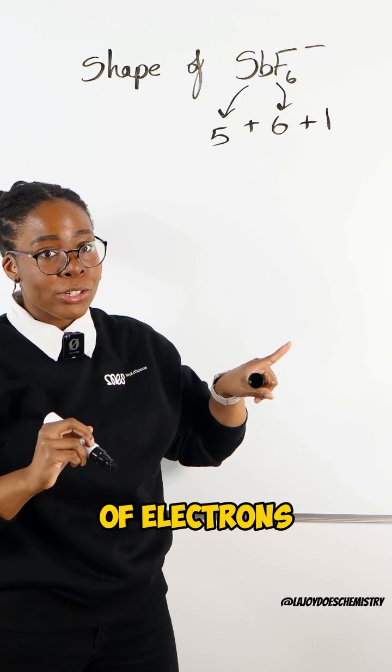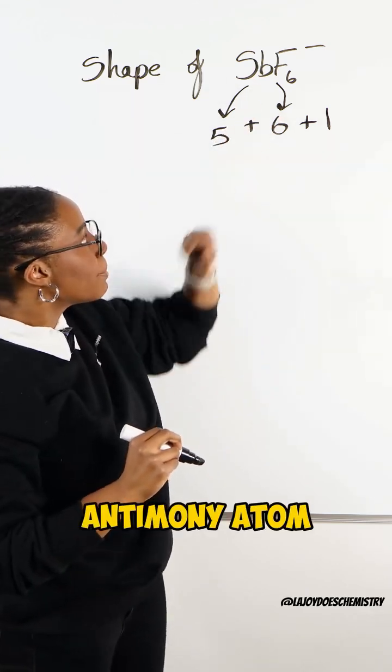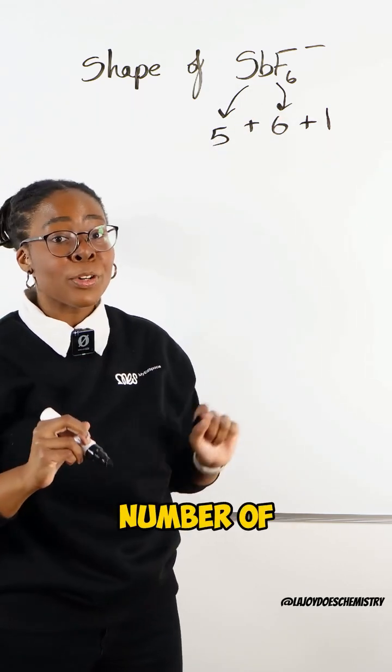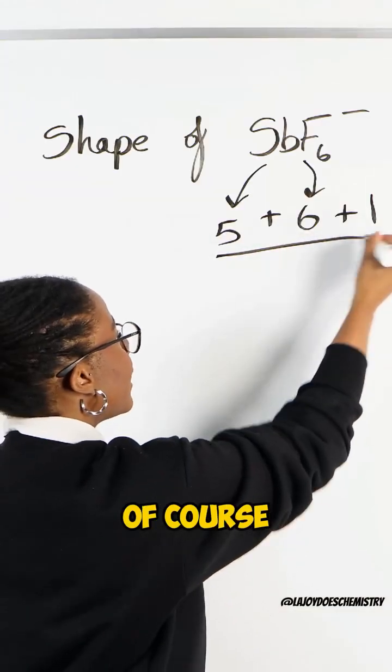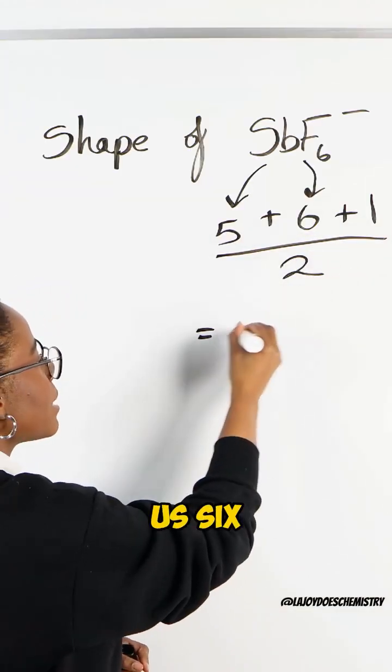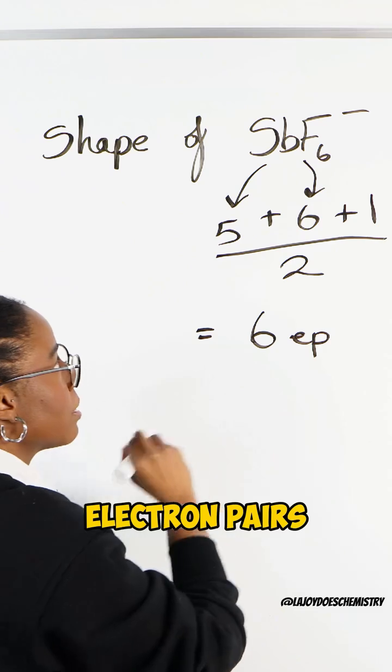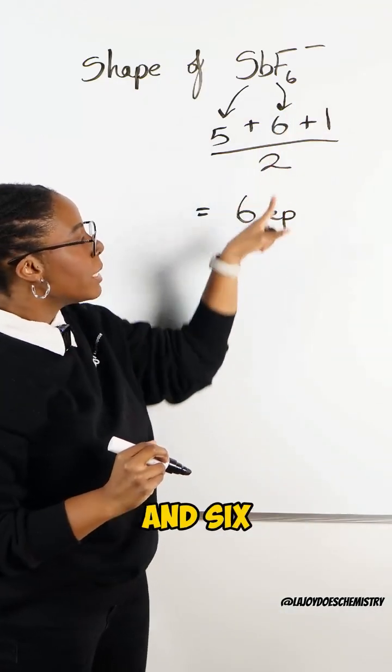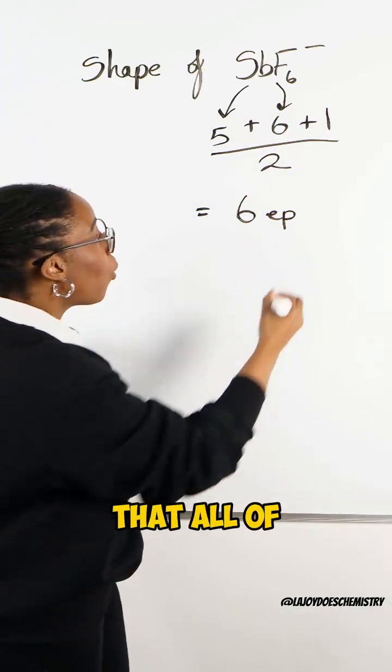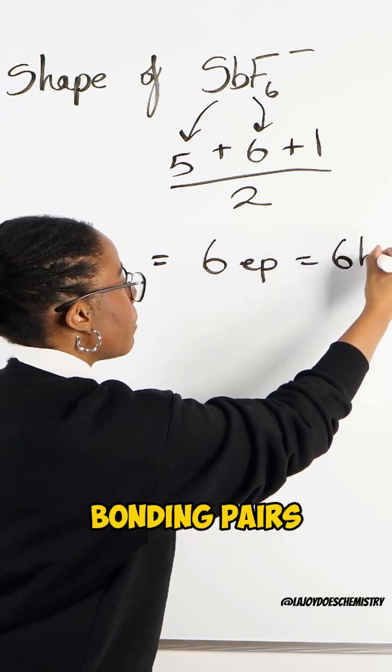That tells us the number of electrons around our central Antimony atom, but to find out the number of electron pairs, we of course divide this by 2, which gives us 6 electron pairs. As there are 6 fluorines and 6 electron pairs, that means all of these are bonding pairs.